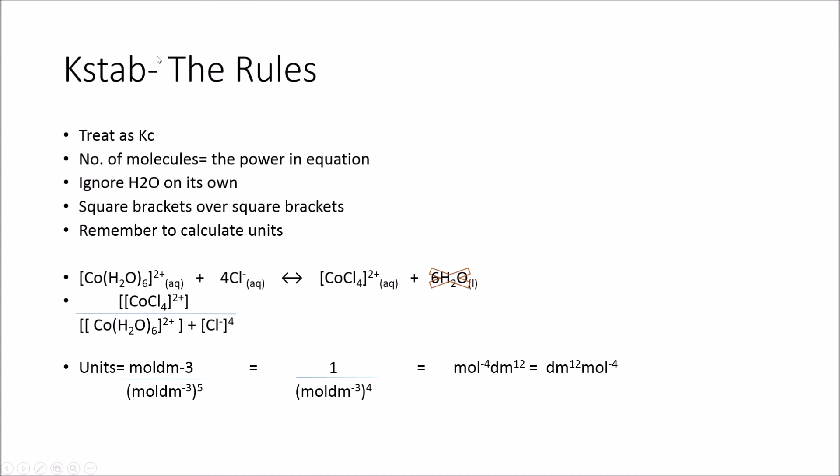So these are the rules of K-stab. If you're ever asked to write that K-stab equation, which we saw was part of our specification, we're going to follow the following rules. We're going to treat it effectively as Kc, so products over reactants. The number of molecules in your equation, so you can see here we have 4Cl, is going to be the power to which you put that concentration in the equation. So here we have 4Cl, so we'd put Cl to the 4, so that Cl- ion is going to be to the 4. Ignore H2O on its own. Here I've just put a cross through it, but if you get H2O, in this case we've had 6 of those H2Os being substituted for 4 of these Cl minuses, you wouldn't include this as part of this equation. That is because the concentration stays fairly constant.